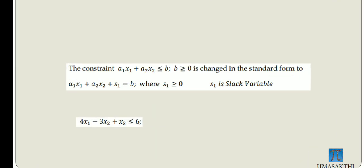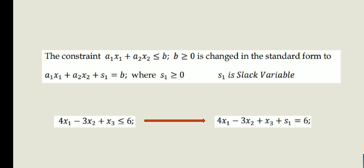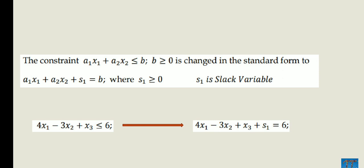For example: 4x1 minus 3x2 plus x3 less than or equal to 6. We add a slack variable S1 to get: 4x1 minus 3x2 plus x3 plus S1 equals 6. This is how we convert a less-than-or-equal constraint to standard form using a slack variable.